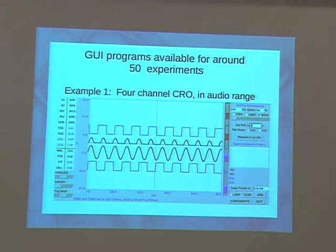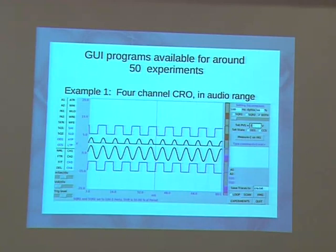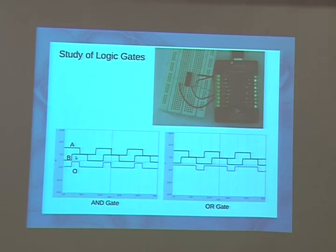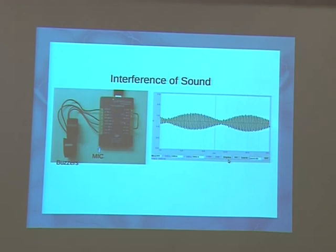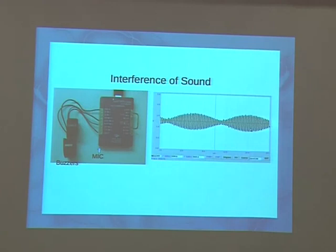Some of the things you can do with this hardware: use it as a four-channel oscilloscope in the audio range — it doesn't go to megahertz. You can study logic gates, where inputs are generated by the box and outputs fed back to it, so you can visualize AND and OR gate behavior. For physics, you can connect two piezo buzzers — the box has a built-in microphone — take the waveform, see how beats are formed, and then use Python to take a Fourier transform and see the two separate frequencies.